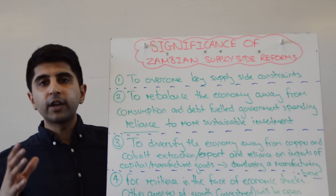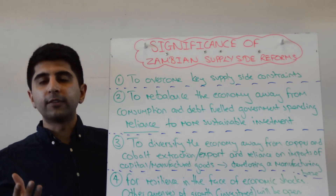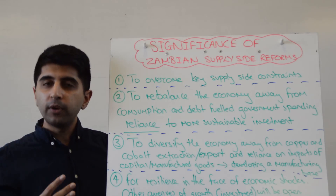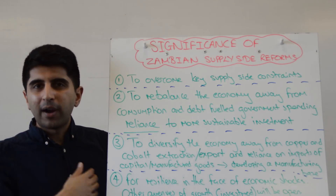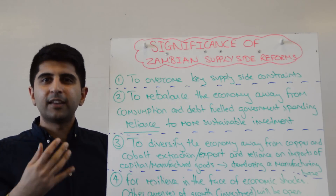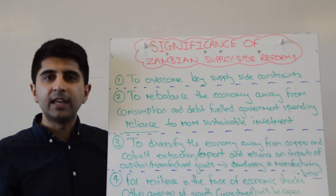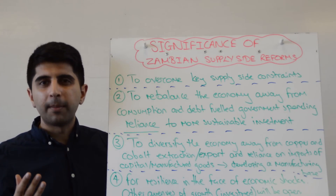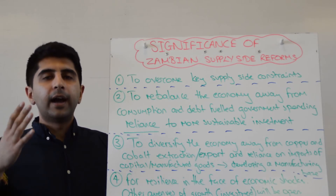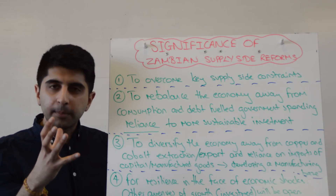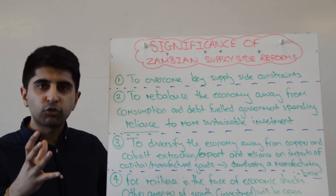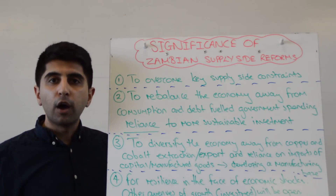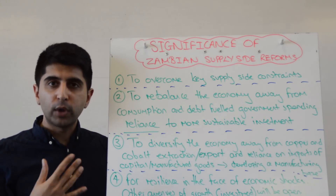The first one is to overcome the constraints mentioned in extract five. Remember those four bullet points? Poor access to credit, poor infrastructure, excessive bureaucracy, and excessive licensing and permit requirements — to overcome those supply-side constraints directly and to allow more of a boost of LRAS quicker.